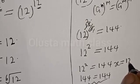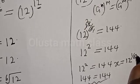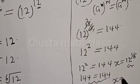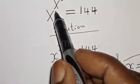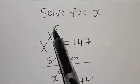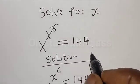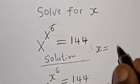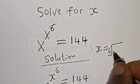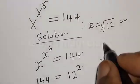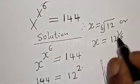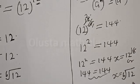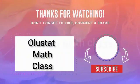Therefore s is equal to 12 raised to power 1 over 6, or s is equal to the sixth root of 12. You can see in the original equation s raised to power s raised to power 6 is equal to 144, and the value of s is the sixth root of 12, or s equals 12 raised to power 1 divided by 6. If you enjoyed the class, please don't forget to like, share, comment and subscribe.